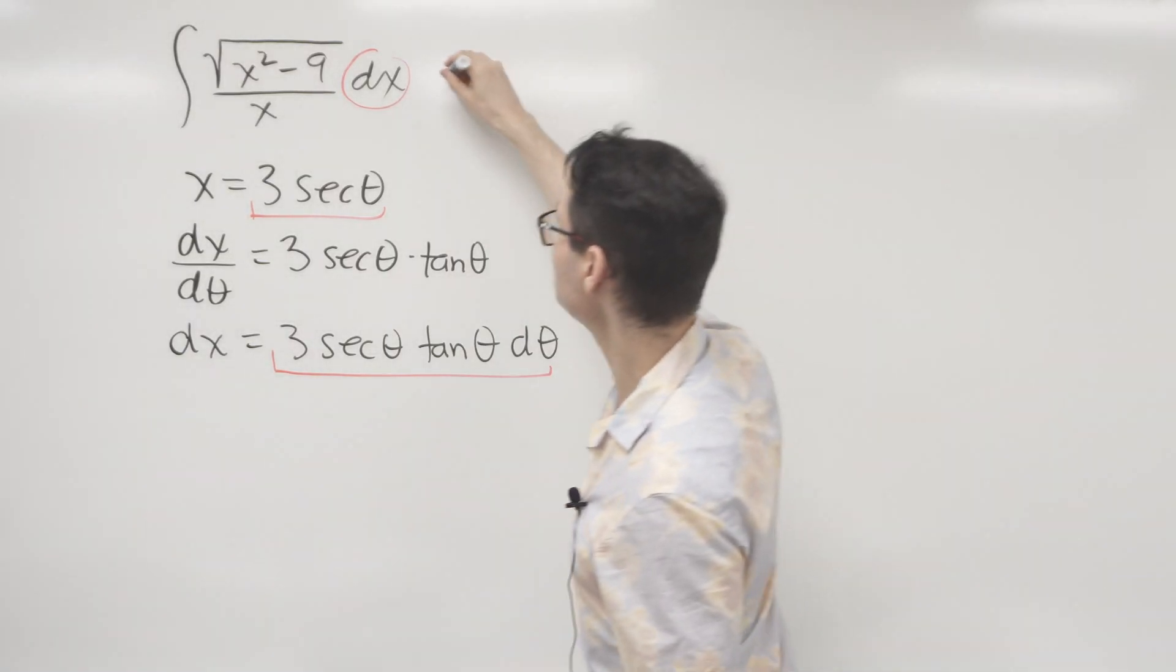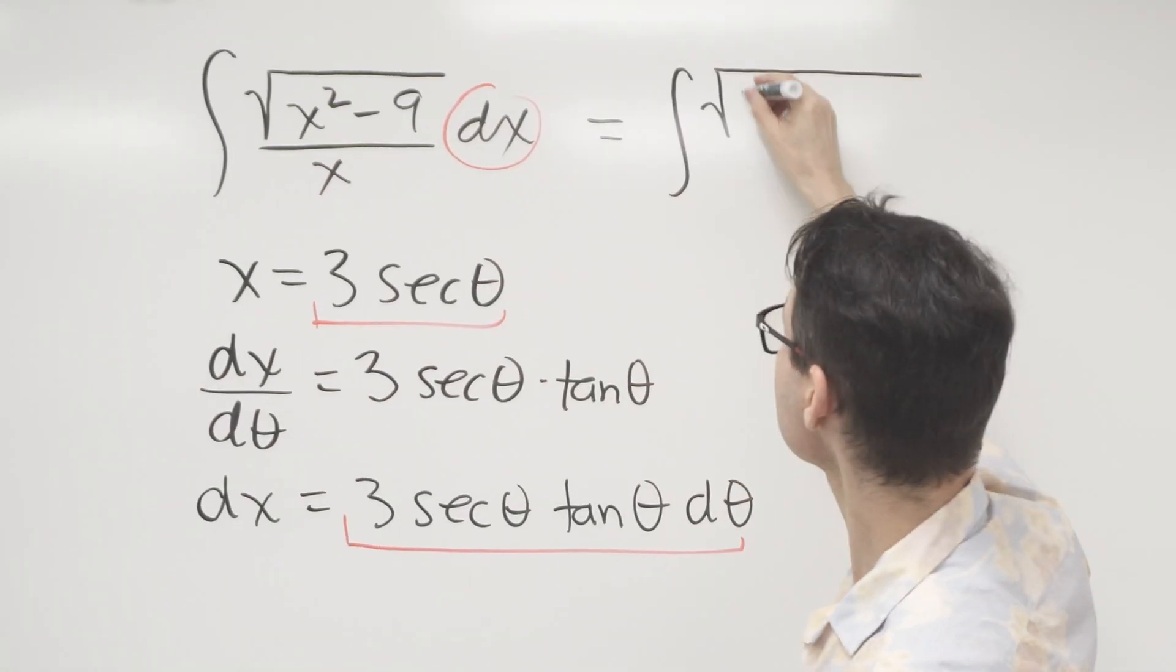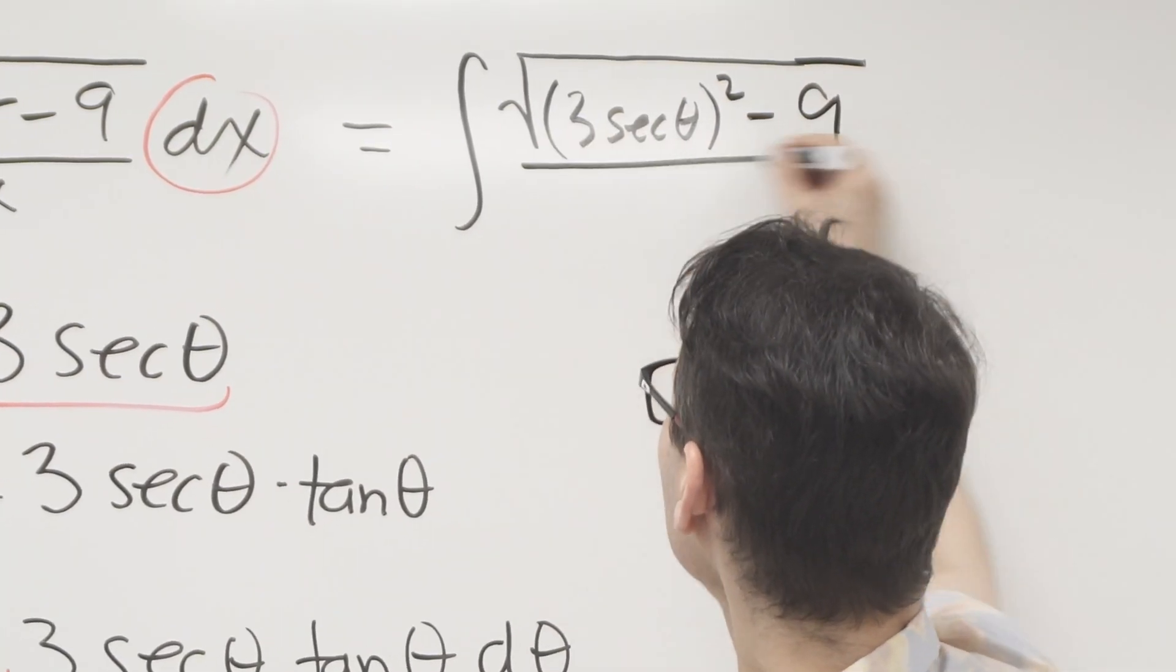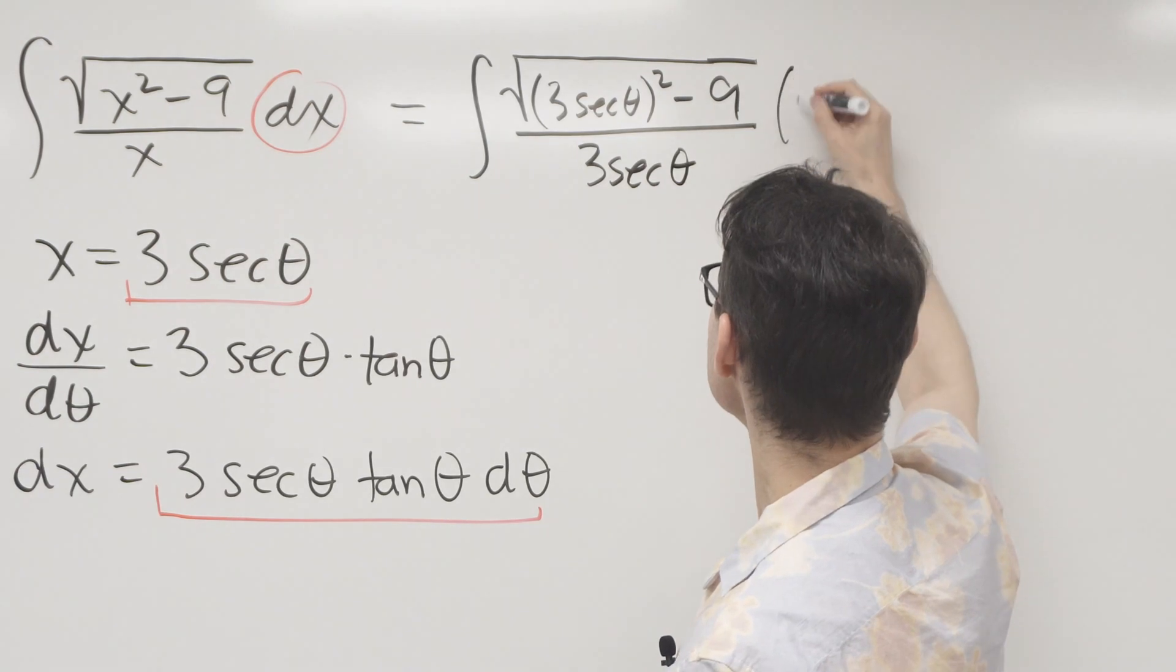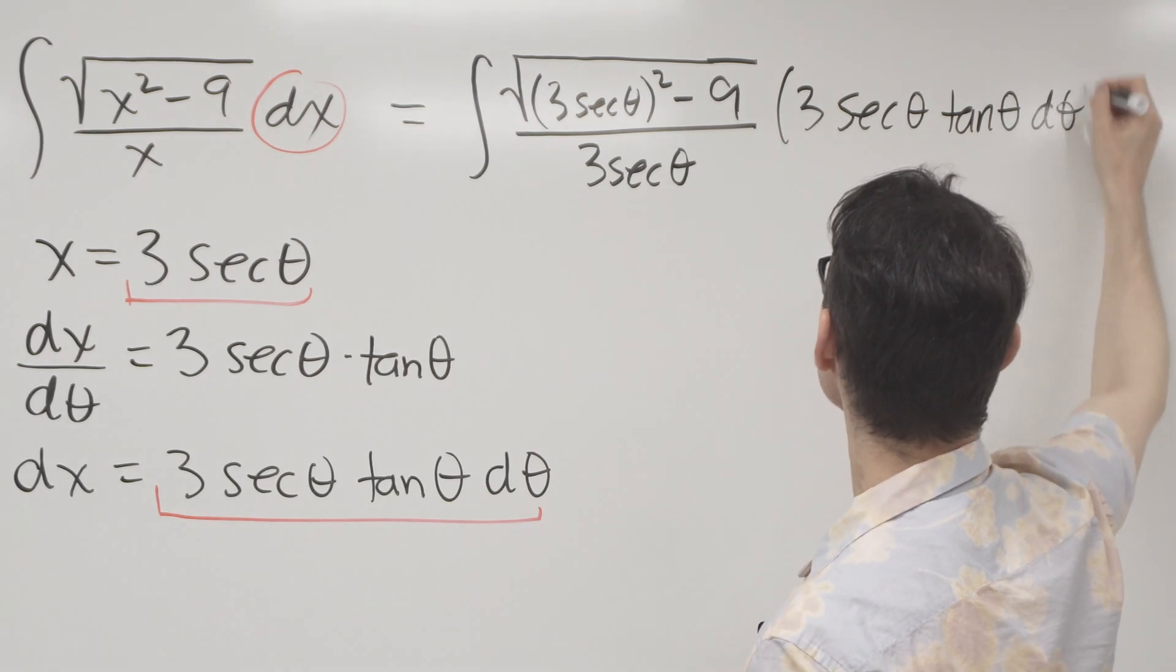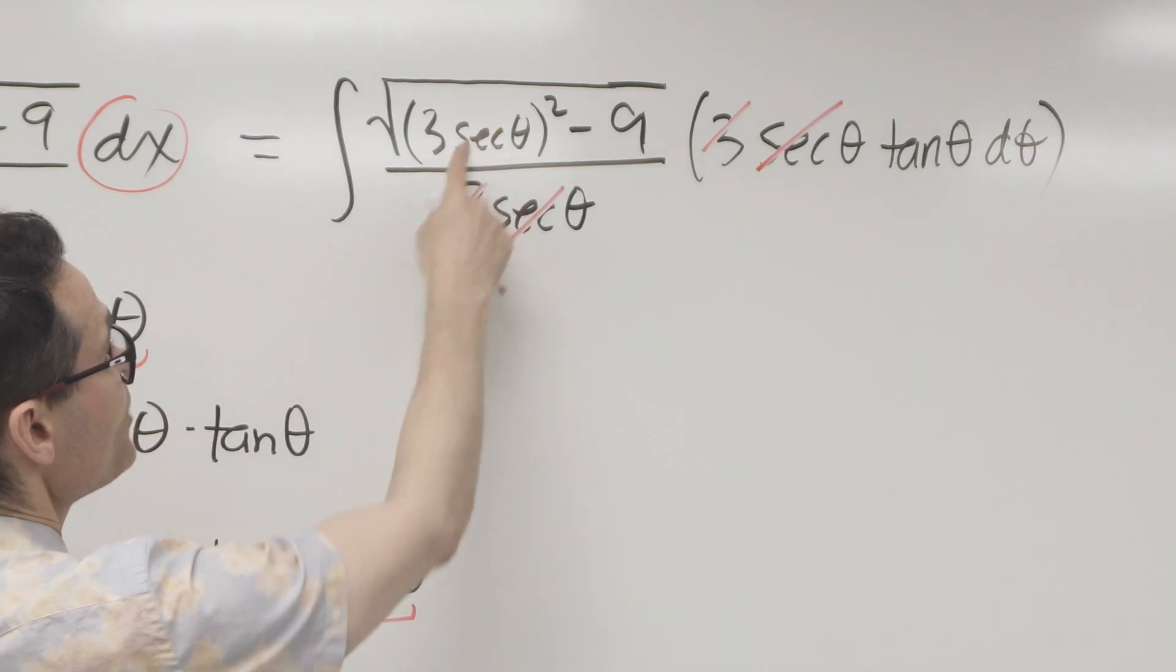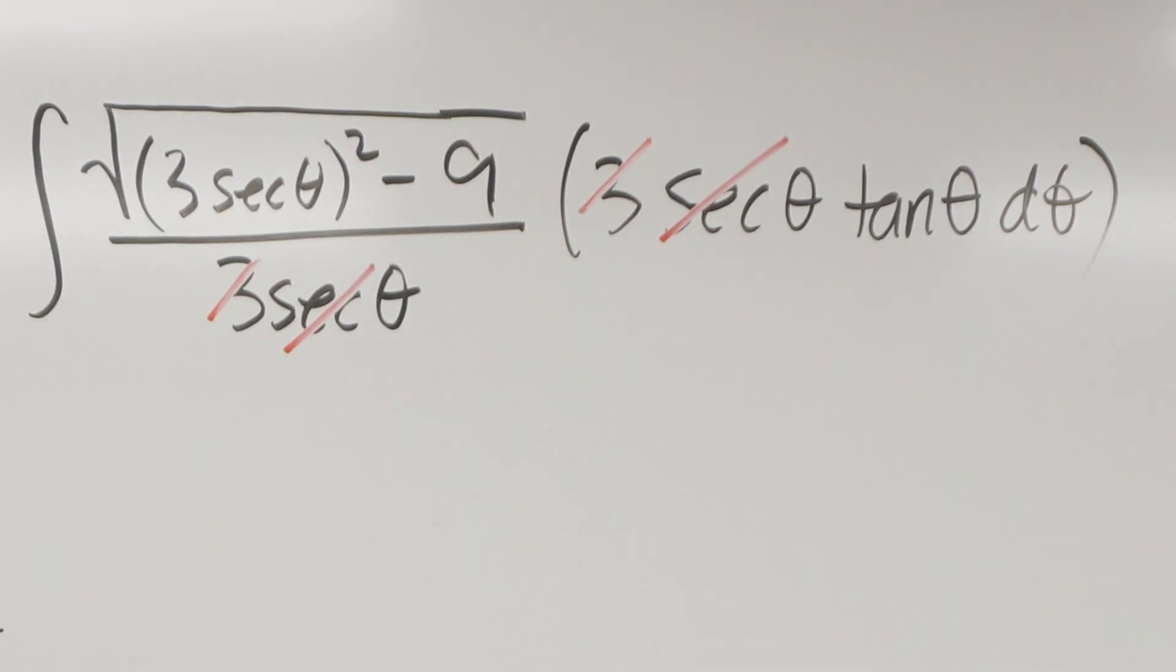So let me rewrite my integral here in terms of theta. So the integral of the square root of X, so X is substituted for 3 secant theta squared minus 9, all over X, which again is 3 secant theta, and DX is 3 secant theta tan theta, D theta. Well look here, we can do some cancellation. The 3's cancel nicely, the secants cancel. And not only that, but look under the radical. Well, 3 squared is 9, and 9 becomes a common factor, which you can then pull out and square root. And the square root of 9 is 3.